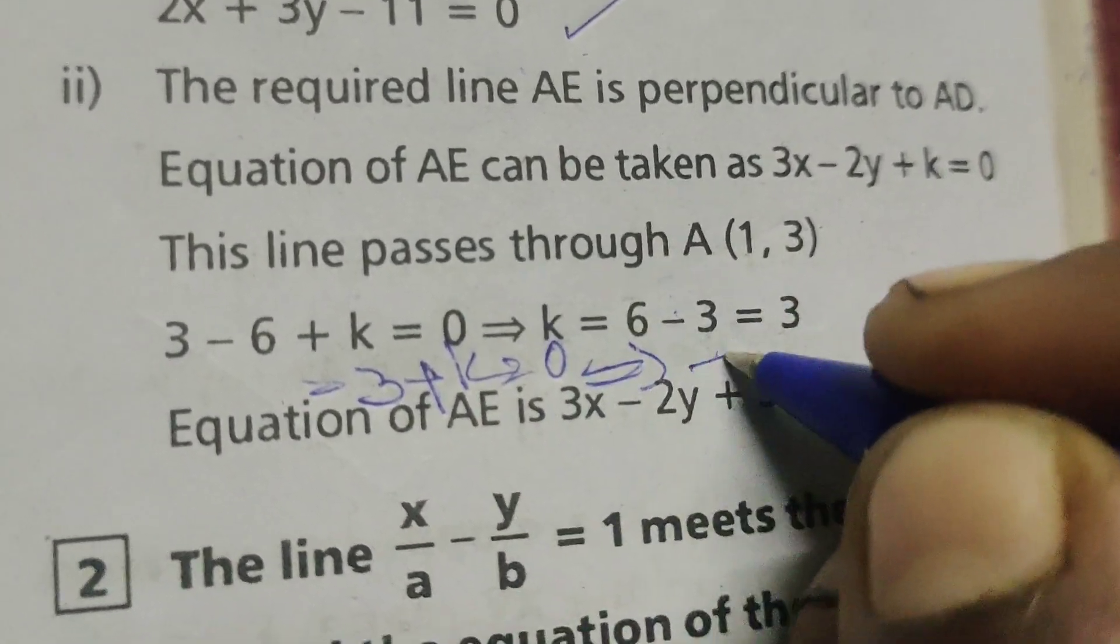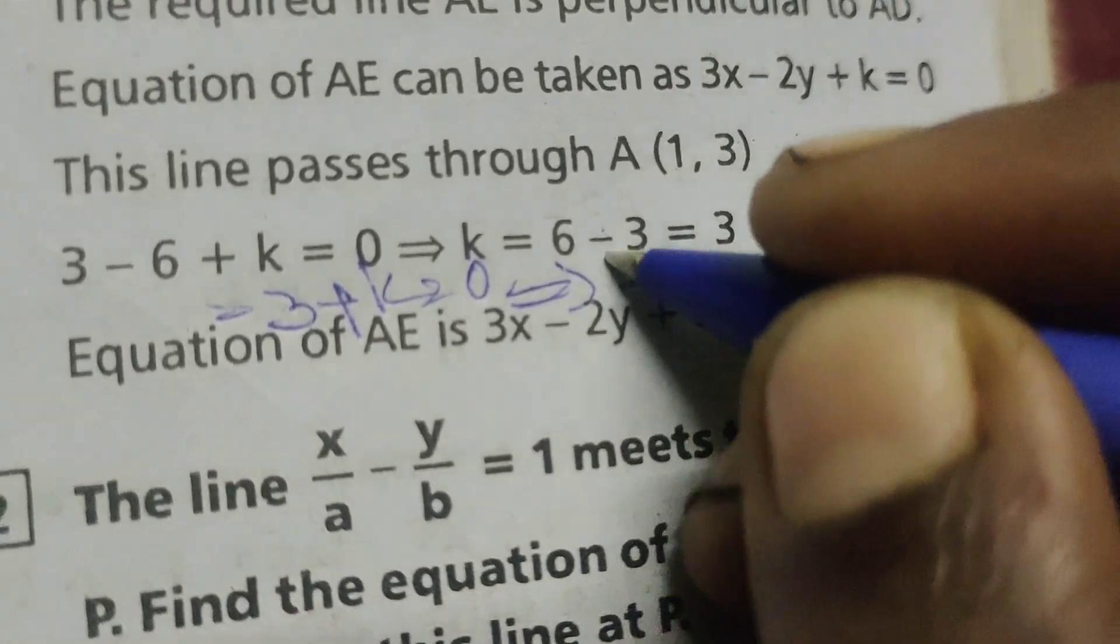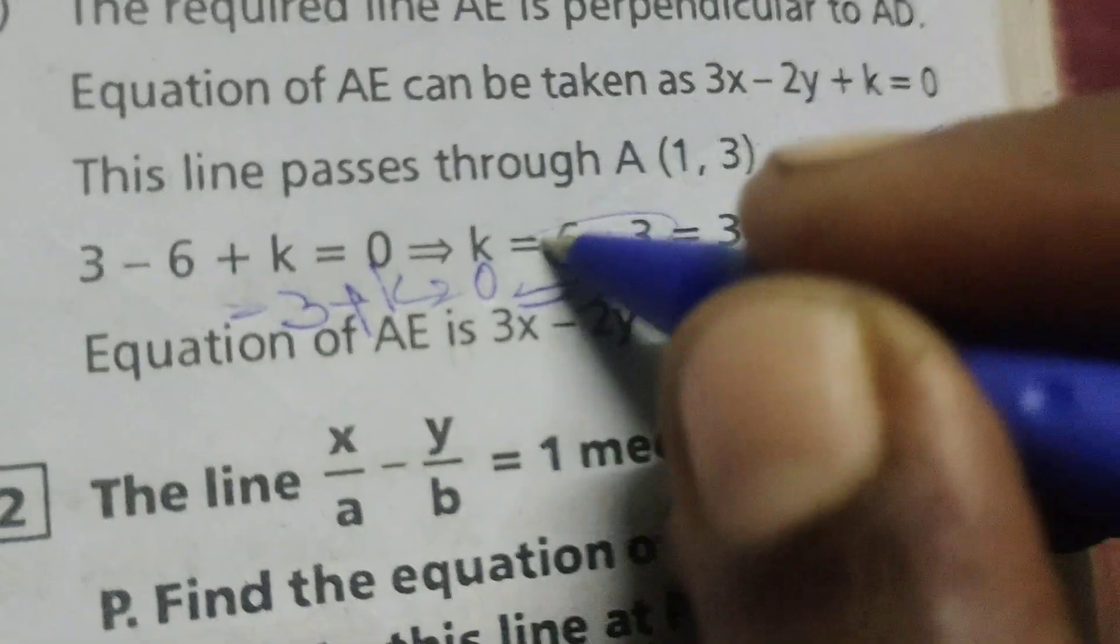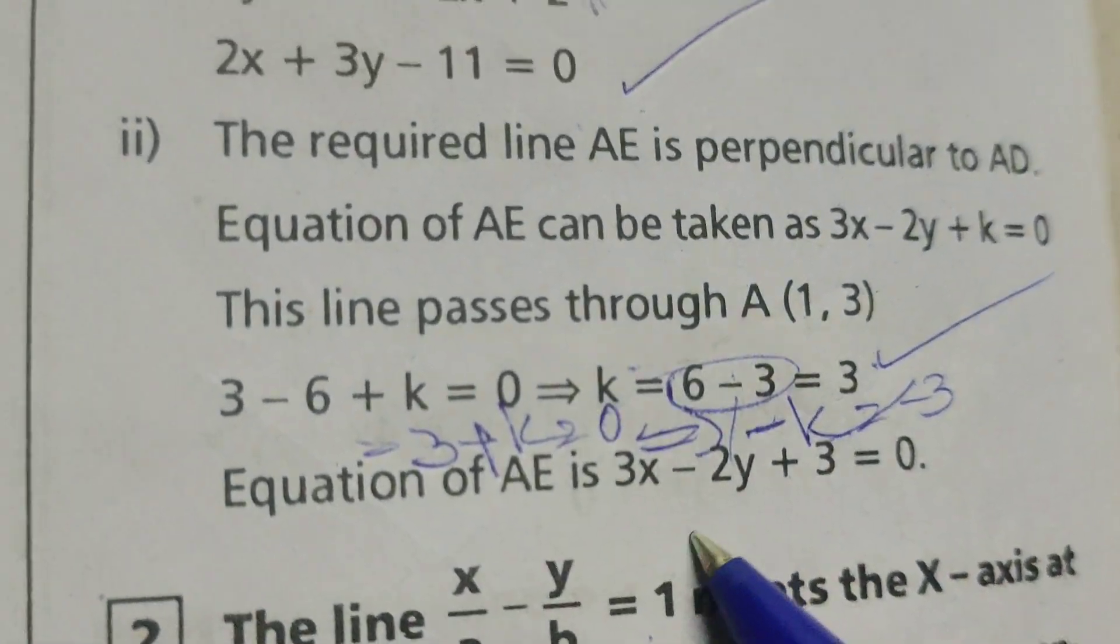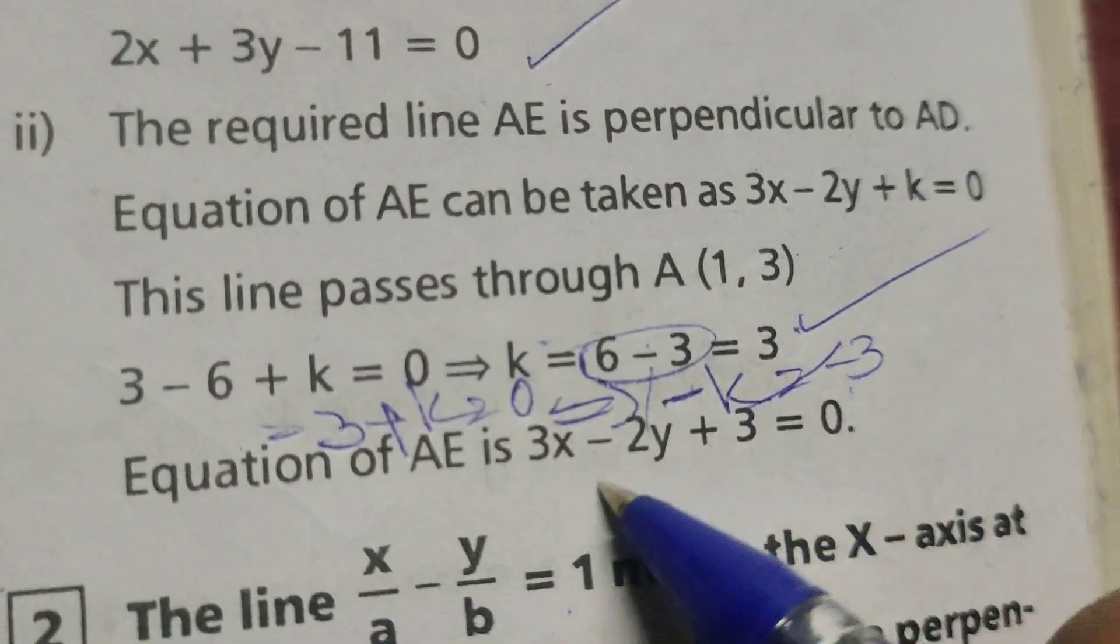Minus k equals to minus 3, k equals to 3. Equation of AE is 3x minus 2y plus 3 equals to 0.